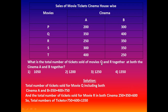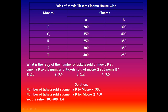Next question: What is the total number of tickets sold of movie Q and R together at both cinema A and B? Options: 1050, 1200, 1250, 1350. Total tickets for movie Q at both cinemas: 350 + 400 = 750. Total tickets for movie R: 250 + 350 = 600. So total = 750 + 600 = 1350. Option number 4 is correct.